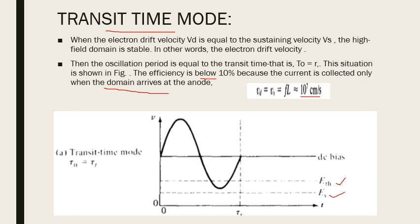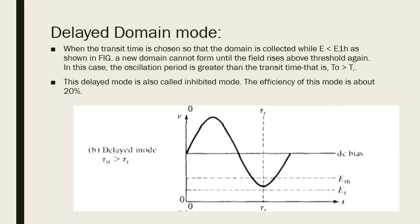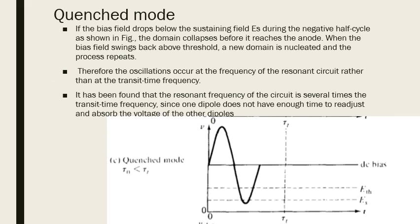The next mode is called the delayed domain mode. In this mode, the oscillation is delayed — the nucleation process for the domain to move from cathode to anode takes additional time. As a result, the high-field domain exists in the device for longer, and efficiency slightly increases to approximately 20 percent.